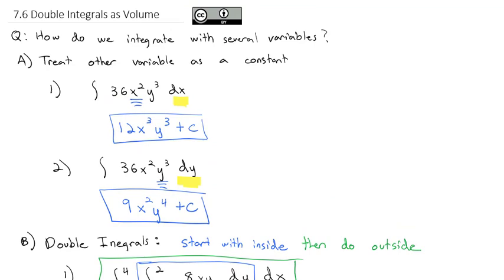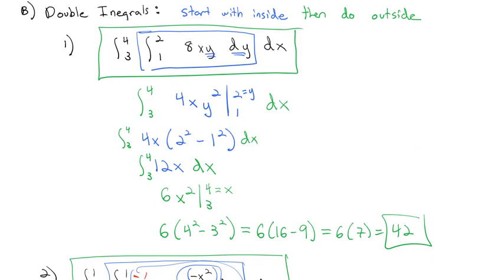Integrating with several variables — specifically with double integrals — is where most of our emphasis is going to be. We look at the inner integral first, keeping track of which variable we're integrating with respect to and treating the other as a constant. Then we move to the outside integral to calculate our final solution. This takes careful work: show your work clearly, don't lose track of your variables, and make note of what's the constant and what order to do things in. Practice them and we'll see you in class.